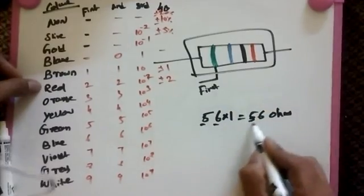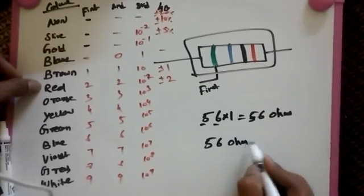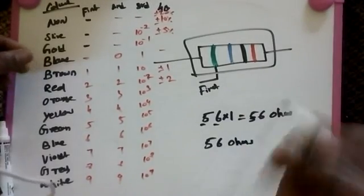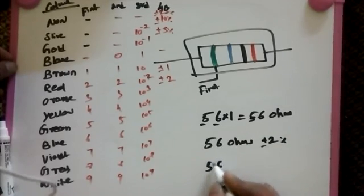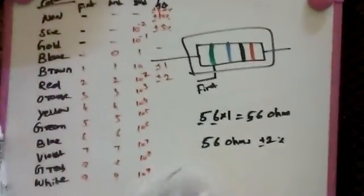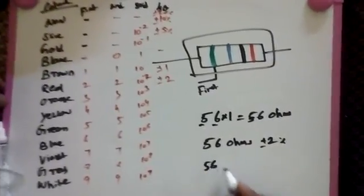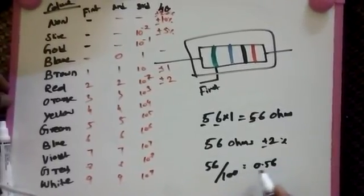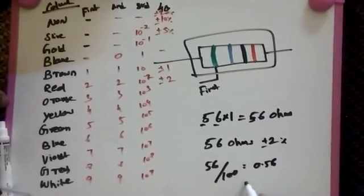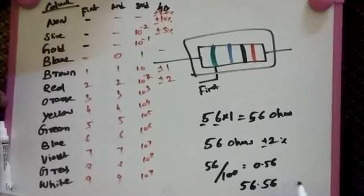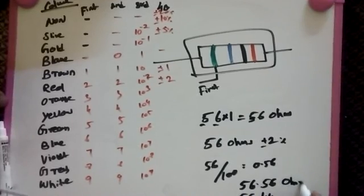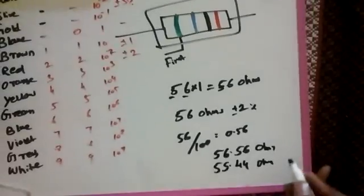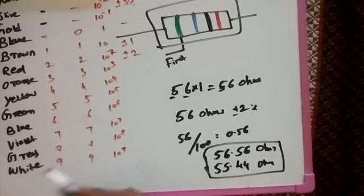For exact value, if you need plus or minus 2%, in one percentage we have to calculate. 56 divided by 100 equals 0.56. So this is for one percentage. In two percentage means we take 56 or 55.44 ohms. This is for exact value of this resistor.